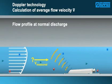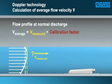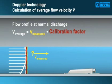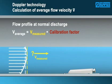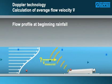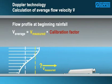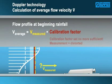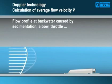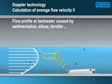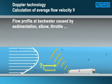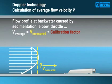Due to this reason, the flow profile cannot be represented. To counteract this shortcoming, the average flow velocity is computed with the aid of a calibration factor. This factor must be determined previously, such as by implementing a grid measurement, which is fairly time-consuming and expensive. The calibration factor is valid only for one stationary condition. If the flow conditions should change, such as due to rainfall, the flow profile will change accordingly. The originally determined calibration factor hence is no longer applicable and the reading is distorted. The flow conditions will change even in case of backwater formation caused by sedimentation, elbows or throttle equipment, and the original calibration factor is no longer valid.